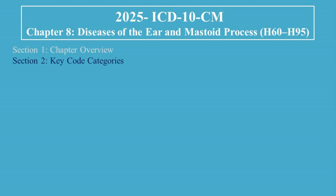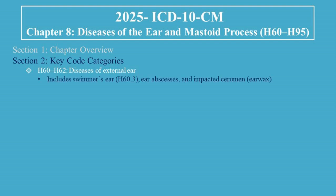Let's go through the key code categories. H60 to H62 covers diseases of the external ear. This includes swimmer's ear (H60.3), ear abscesses, and impacted cerumen (earwax). Example: H61.23, Impacted Cerumen, Bilateral.